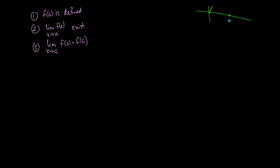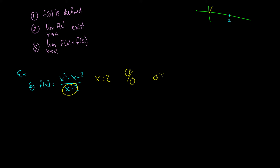We're going to jump straight into an example. We're going to talk about the function f of x equals x squared minus x minus 2 over x minus 2. Looking at the denominator, if x equals 2, then the function is not defined — that would be 4 minus 2 minus 2, giving 0 over 0. So it would be discontinuous at 2.